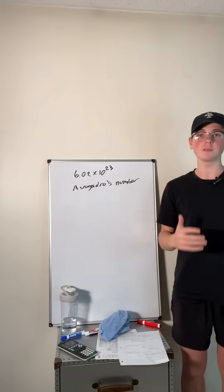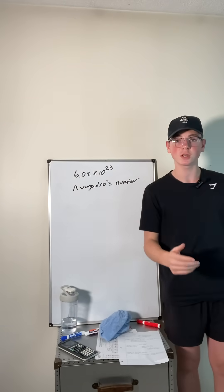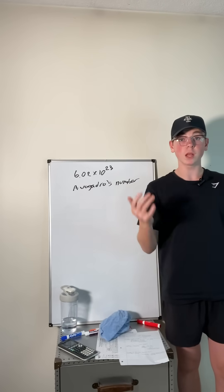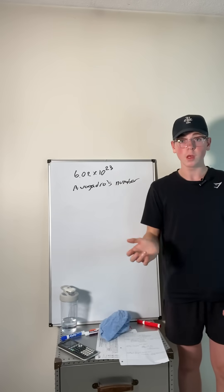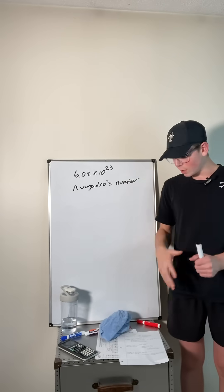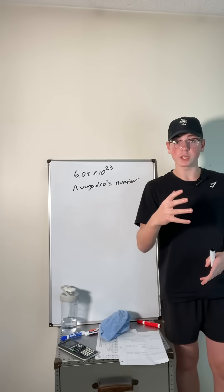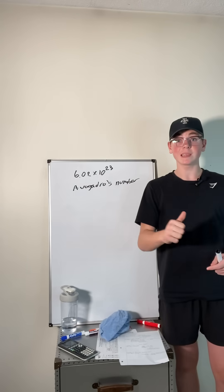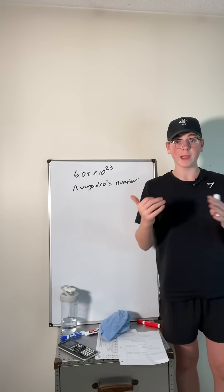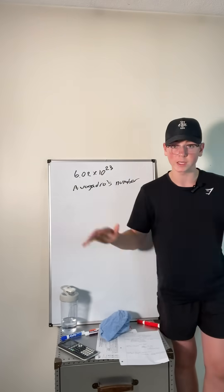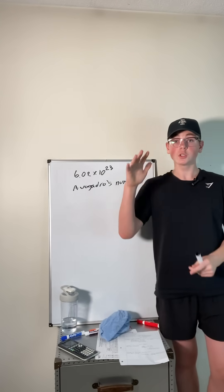It's 6.02 times 10 to the 23rd molecules per mole, meaning that hydrogen can be easily converted into grams per mole, and this can be used for ratios all over.